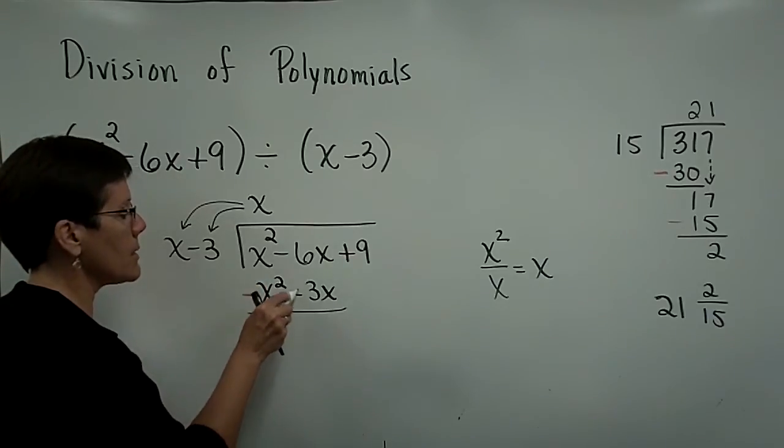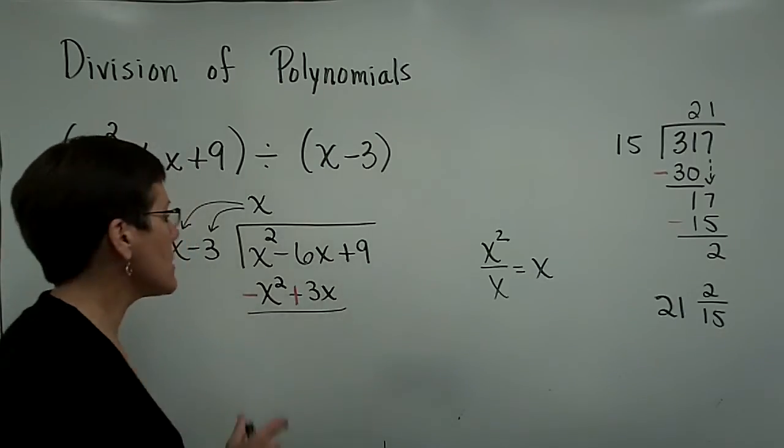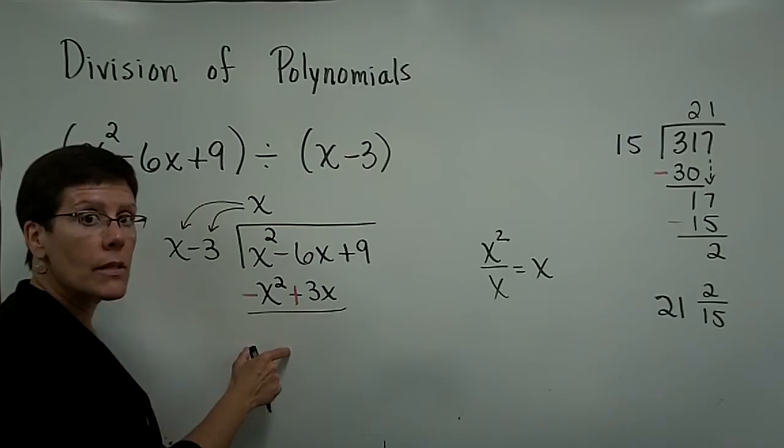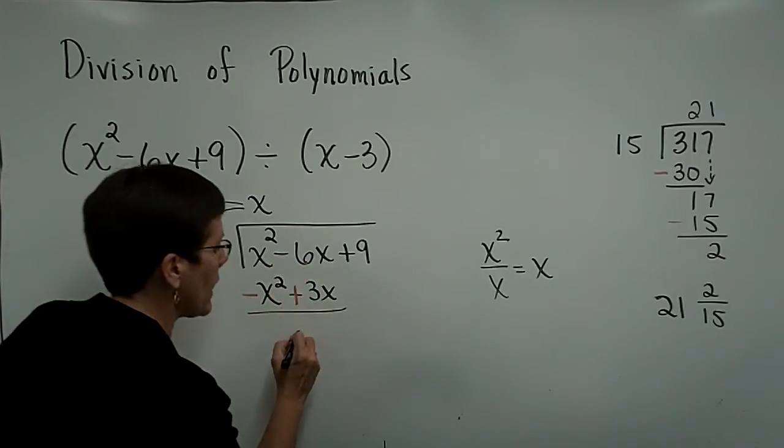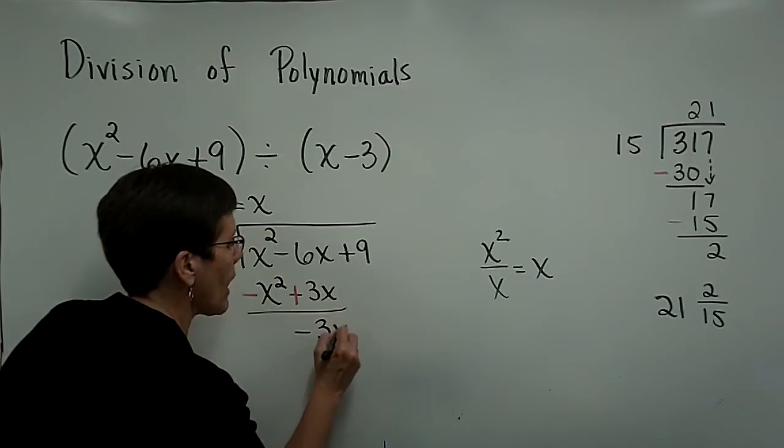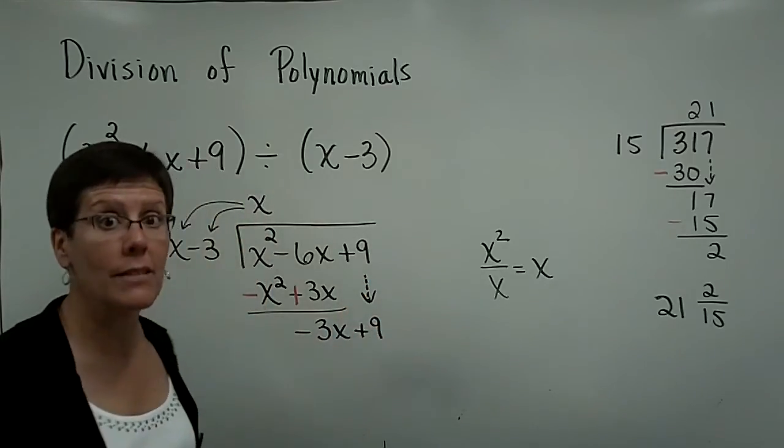The x squared will become minus, and this will become positive in order to subtract. And as a result, these first terms will always add to be nothing. This minus 6 and this plus 3 will add to be a negative 3x. And now I will bring down the positive 9 and start the process over again.